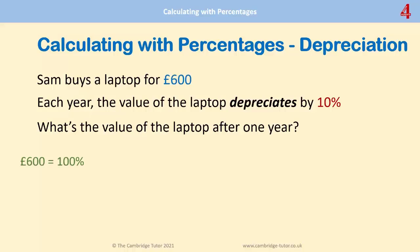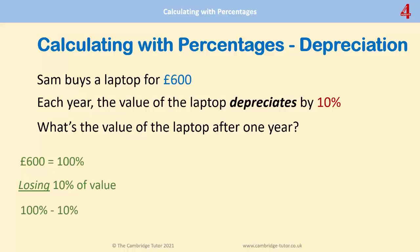Bear in mind that £600 is 100% of the amount that Sam paid for the laptop. She's losing 10% of that value. This time, we have to take that 10% away from the 100%, which leaves 90%.